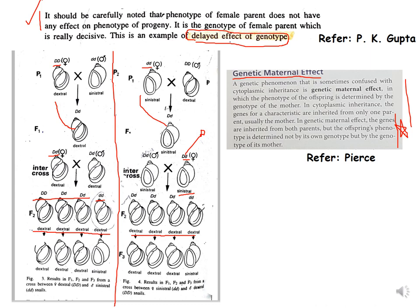This is an example of the delayed effect of genotype. Until F1, progeny resembled the phenotype of the female parent, but from F2 onwards they reflect the genotype of the female parent. As stated in PK Gupta: it should be carefully noted that the phenotype of the female parent does not have any effect on the phenotype of the progeny from F2 onwards — it is the genotype of the female parent which is decisive.